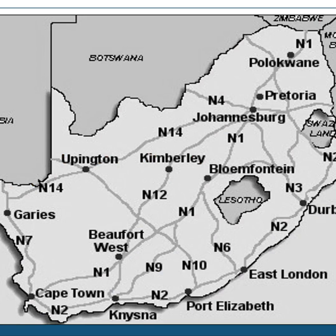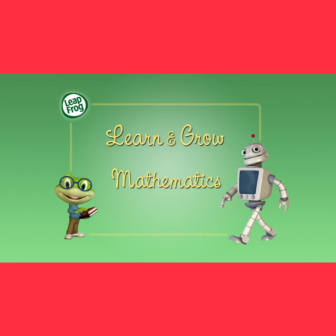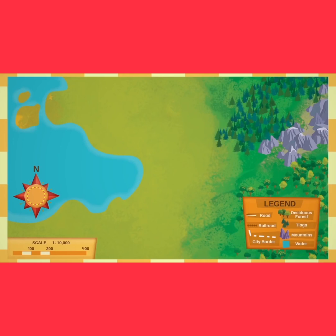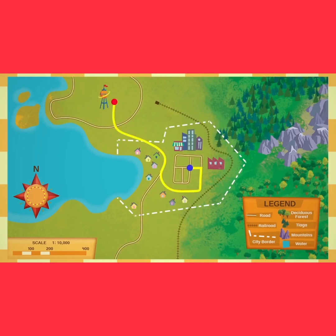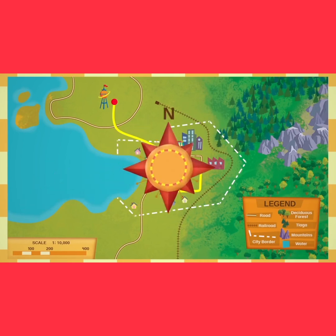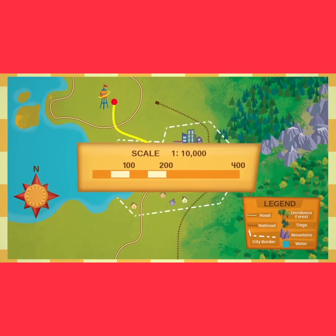As you can see, we have the N1 meeting up with the N2, and also the N12 that leads to Kimberley. Maps show us where we are and where we need to go — showing places like countries, cities, roads, and famous landmarks. On a map, you might see a compass rose that tells you which way is north. The legend tells you what all the symbols mean. And to find the distance between two places, use the map scale — it looks like a ruler.